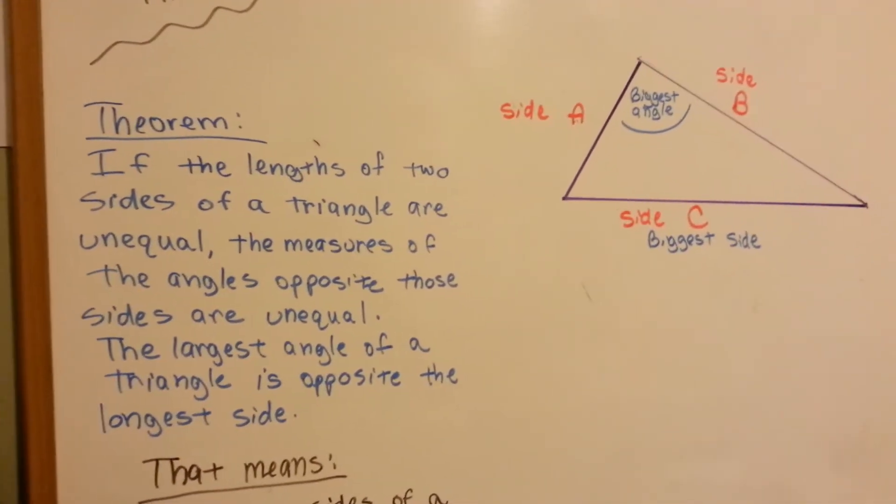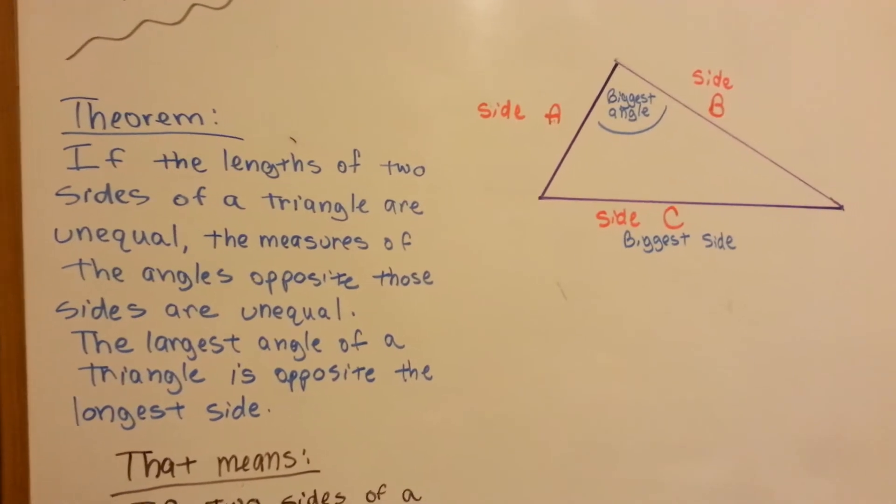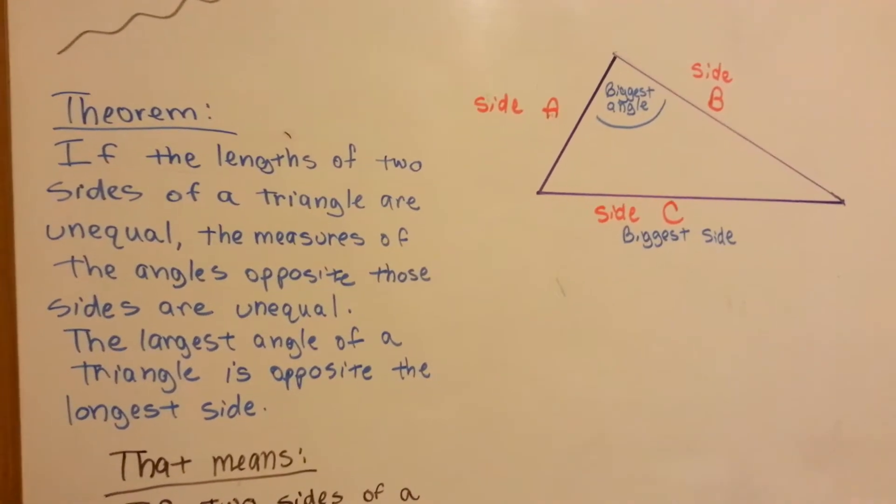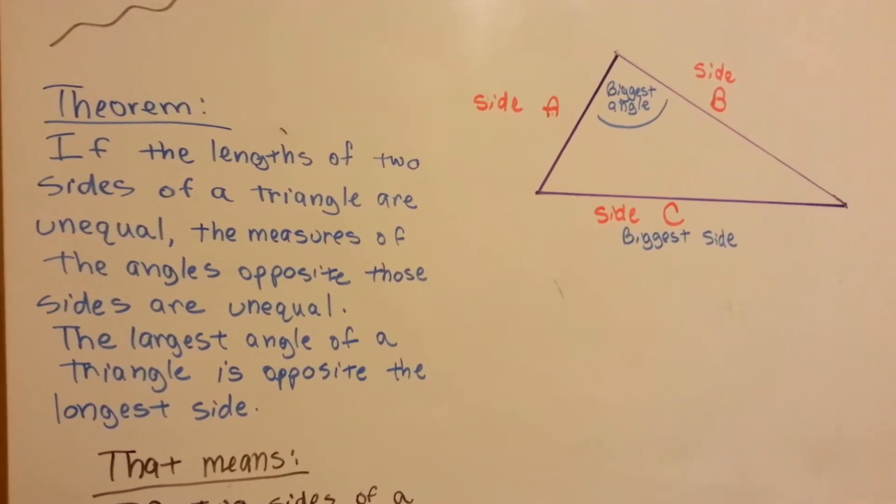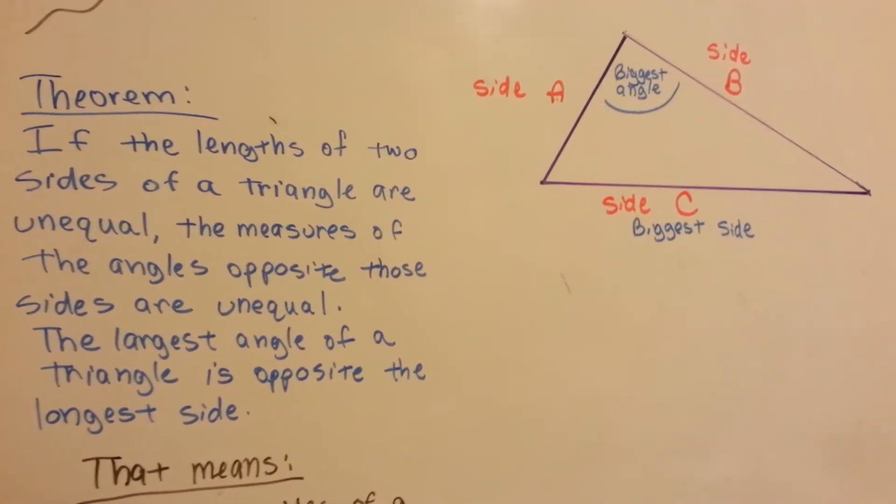If the lengths of two sides of a triangle are unequal, the measures of the angles opposite those sides are unequal. The largest angle of a triangle is opposite the longest side.